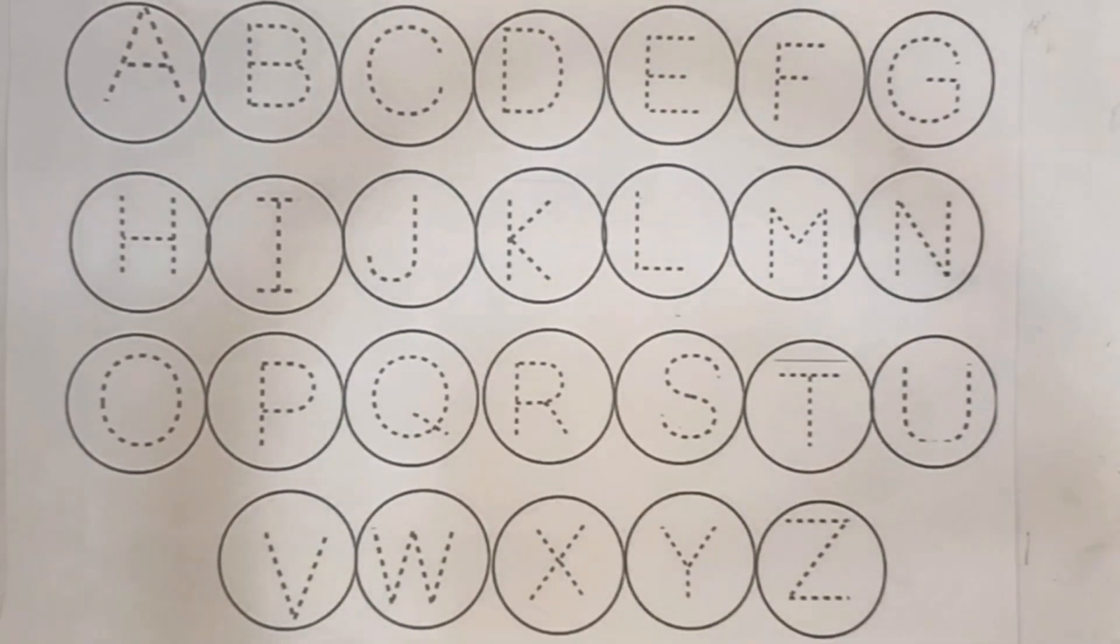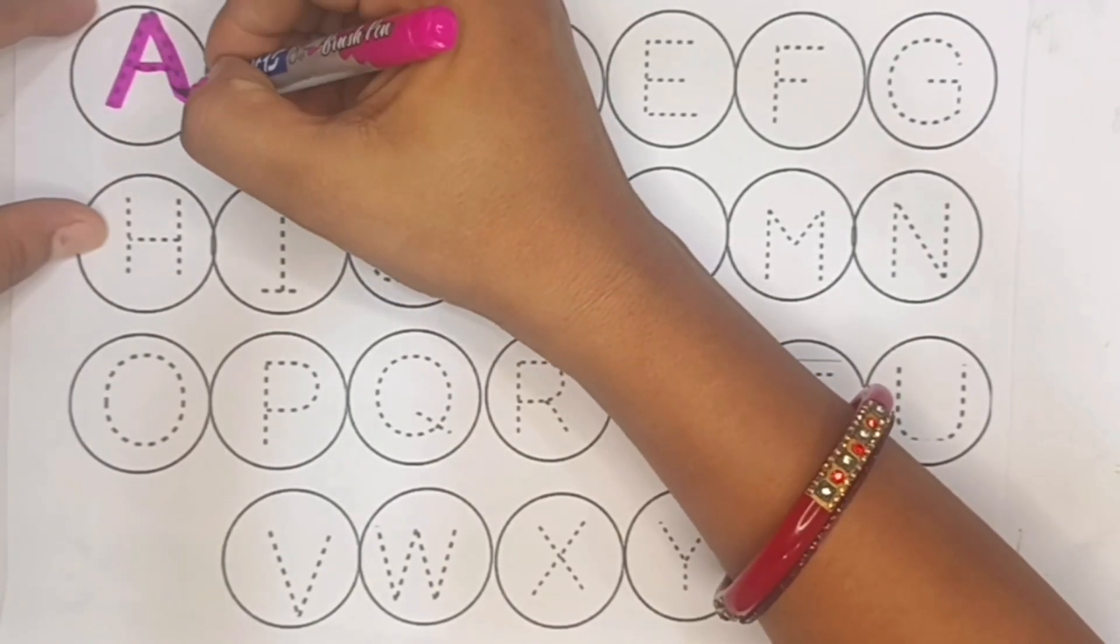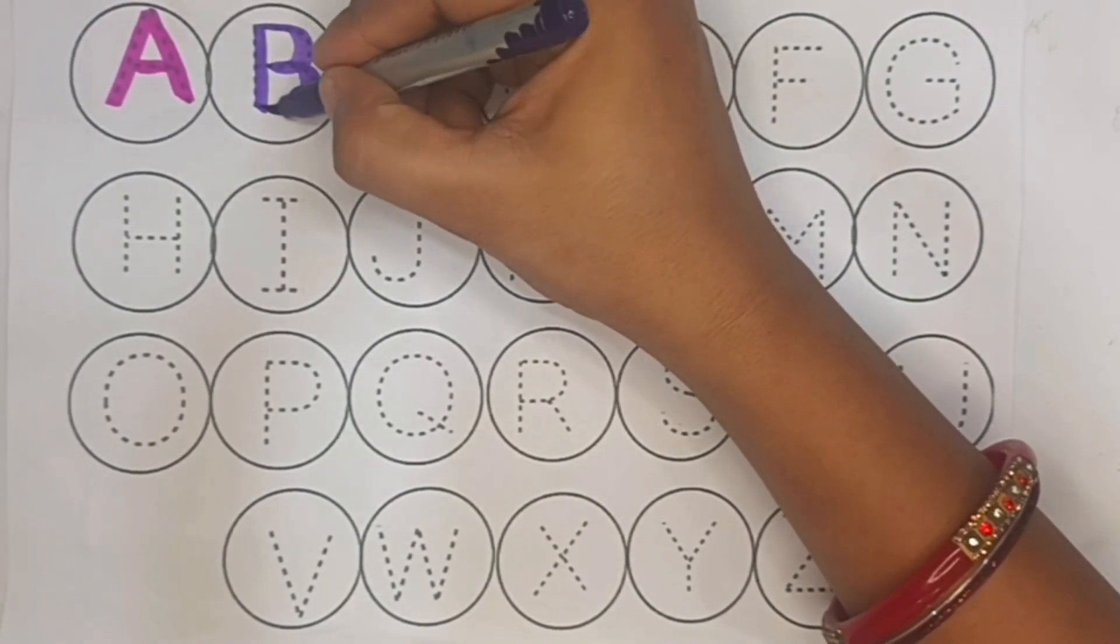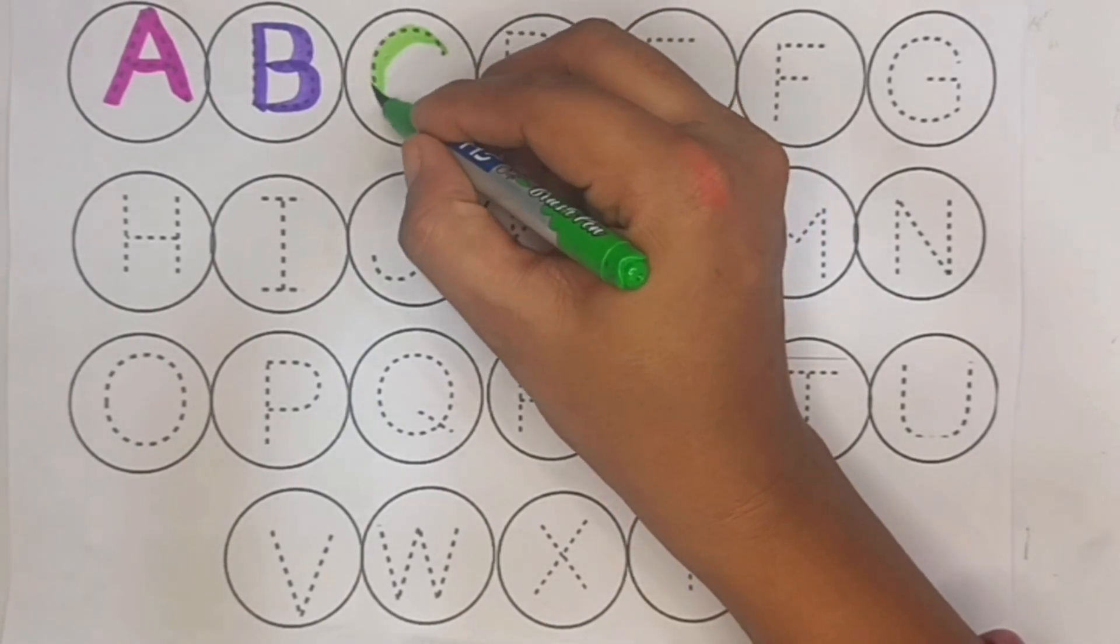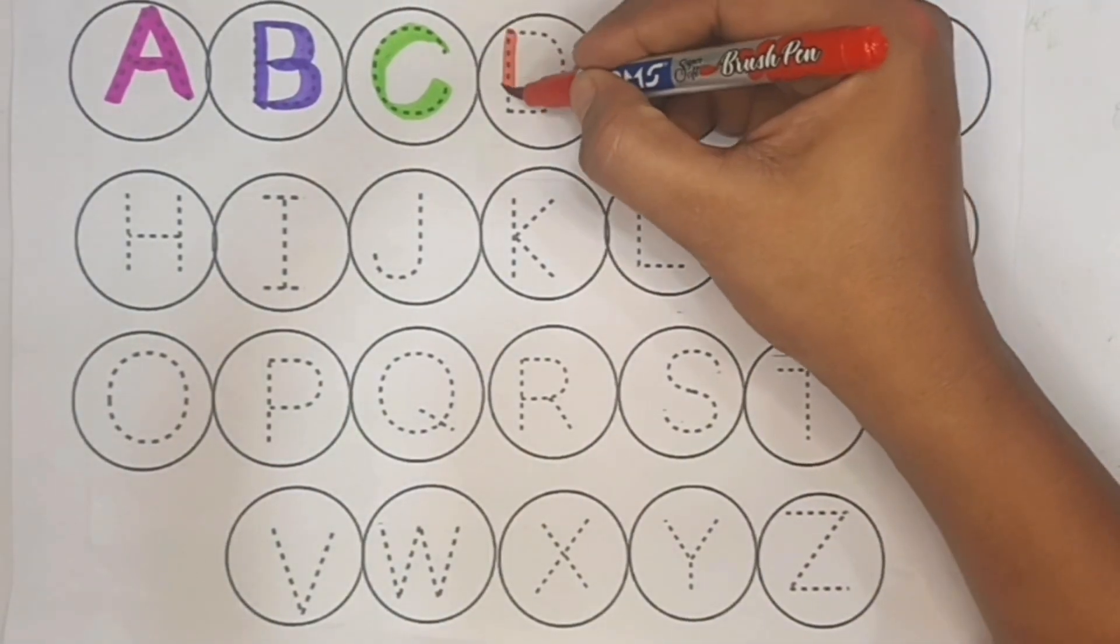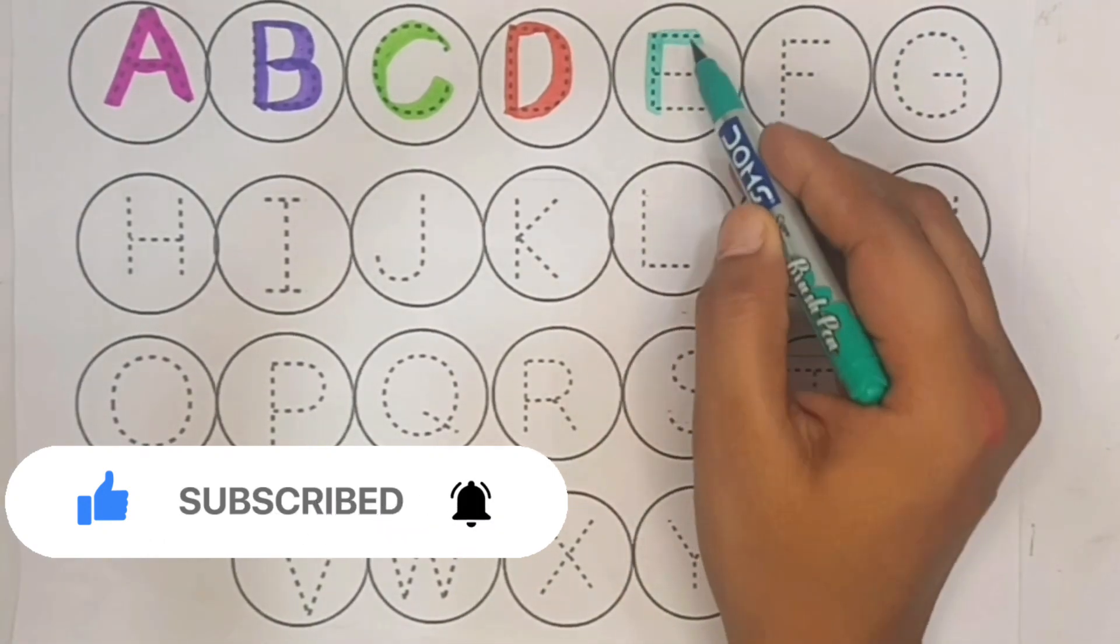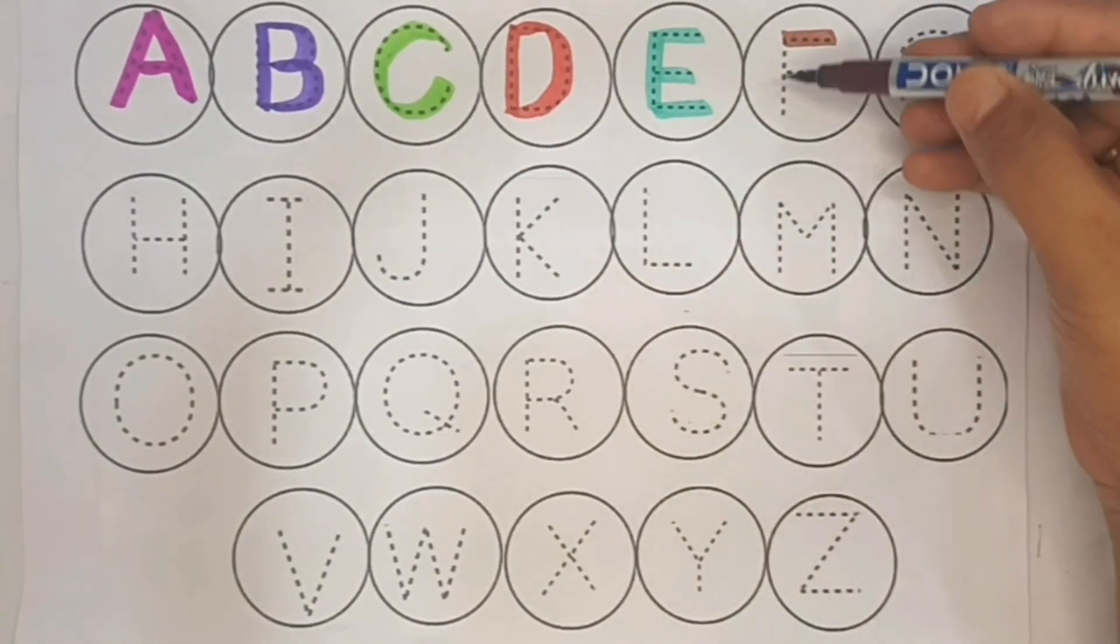A for aeroplane, B for broken, C for cherry, D for doll, E for elephant, F for flower.